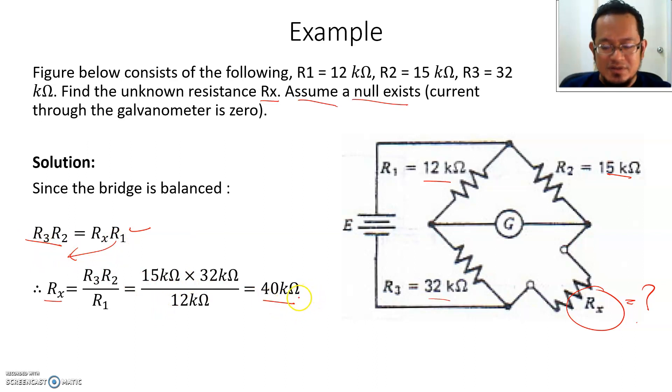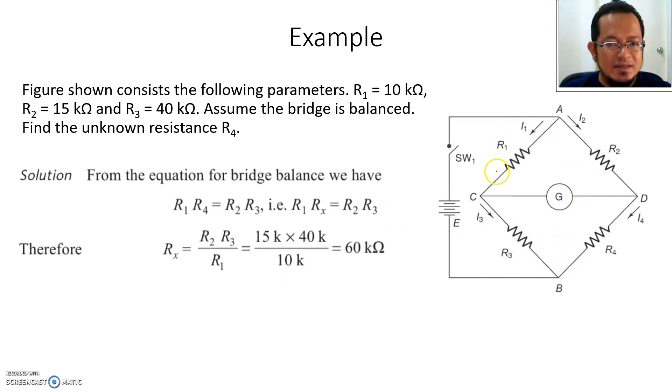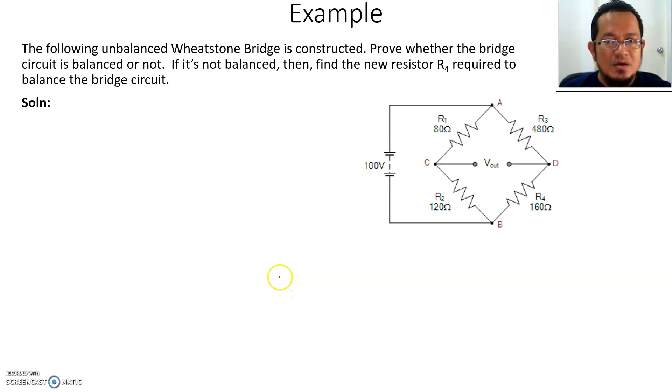But remember, this is only valid for balanced condition. There's another example here for the same Wheatstone bridge with different R values. I guess you can go ahead and understand. It's pretty much straightforward to understand, so I'll just skip through this one.